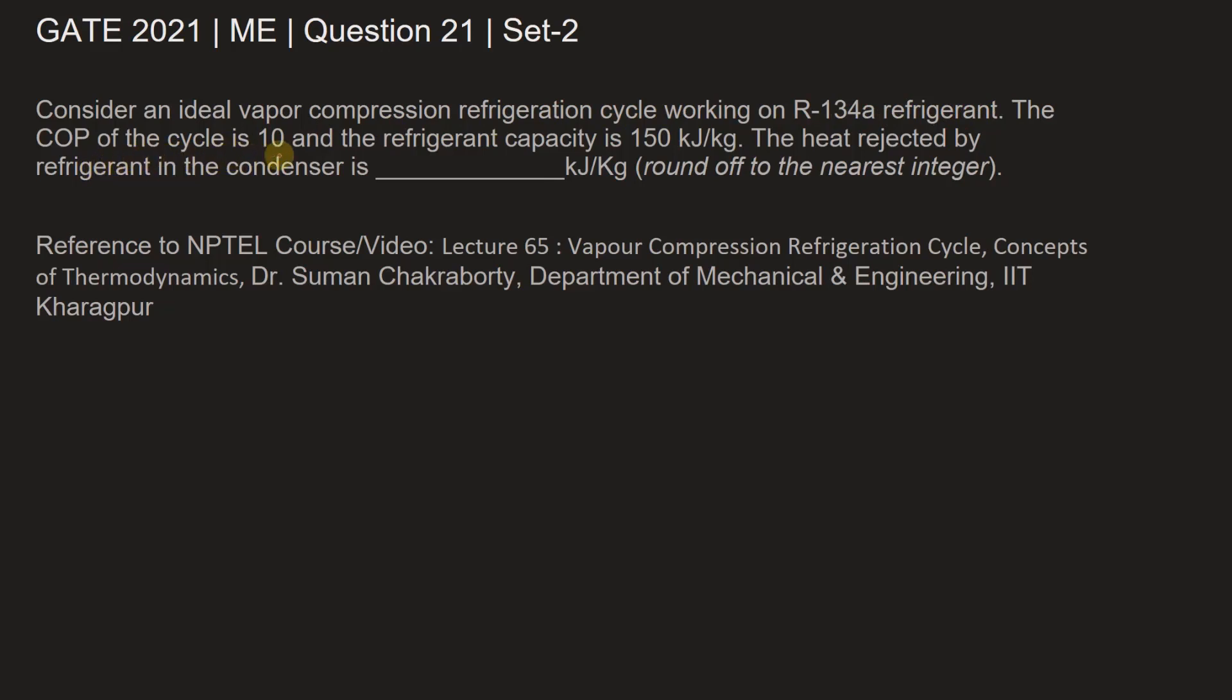The COP of the cycle is 10 and the refrigerant capacity is 150 kilojoule per kg. The heat rejected by refrigerant in the condenser is blank kilojoule per kilogram. We need to find the heat rejected by refrigerant in condenser, rounded off to the nearest integer. Before proceeding further, let's understand the working of a refrigeration cycle.